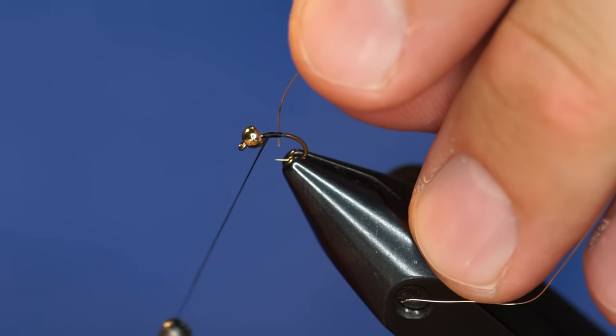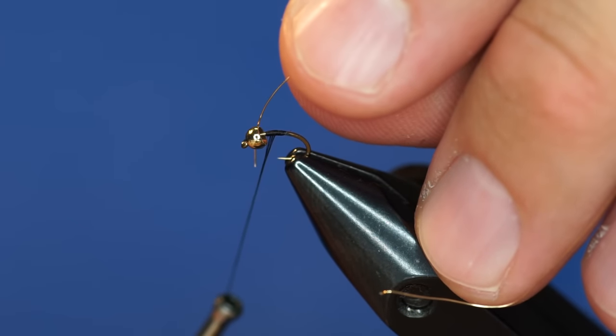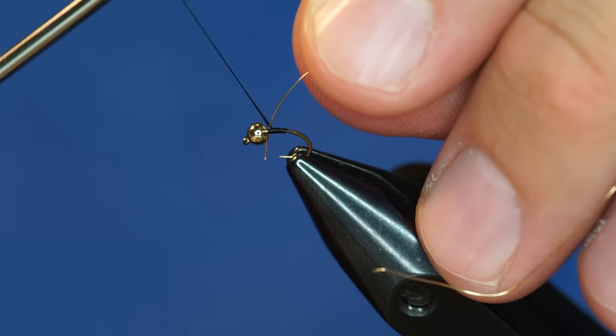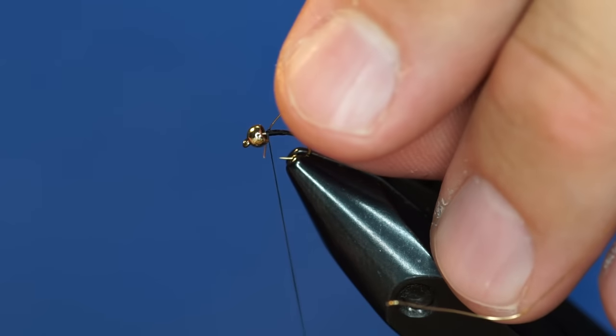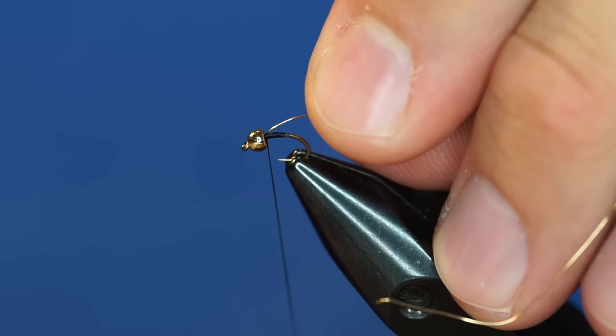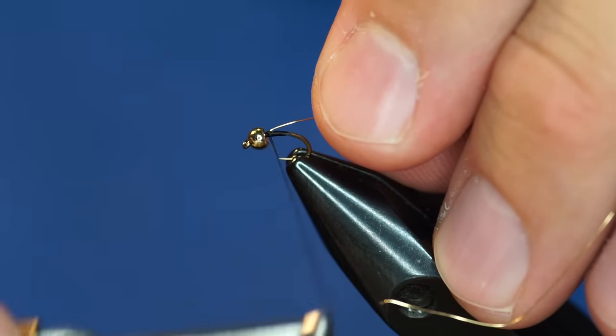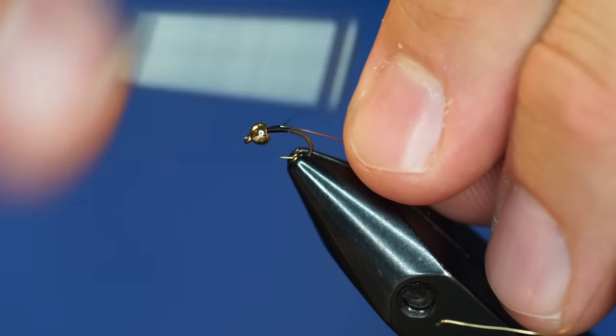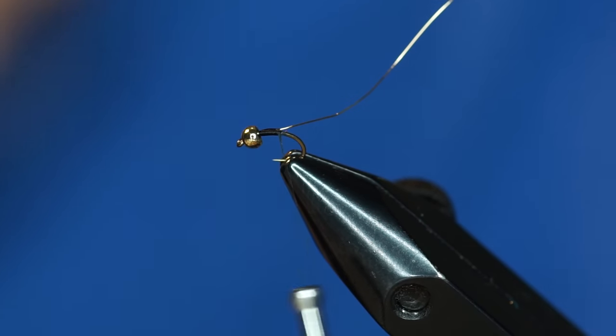I'm going to take my wire and lay it perpendicular to the hook shank like this, then catch it with my thread with two or three wraps and just pull it into place until that tip of wire goes right behind the bead. Now I'm going to start wrapping down the hook shank. This is a tiny hook.